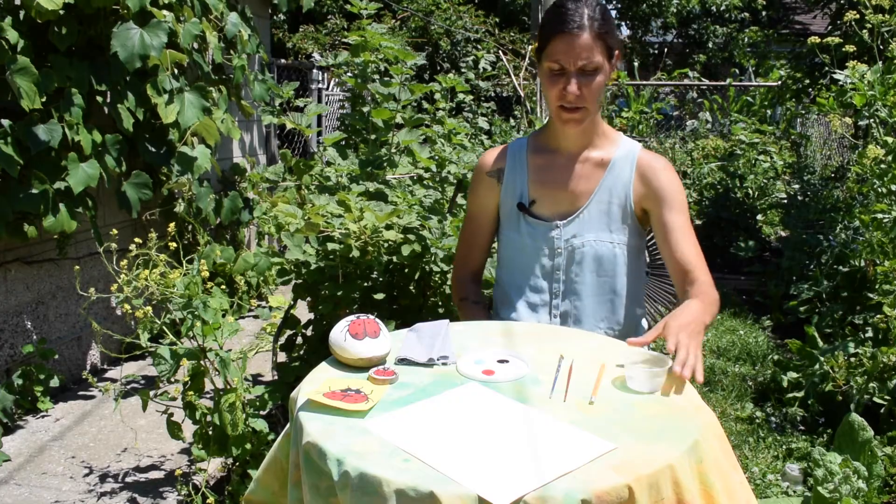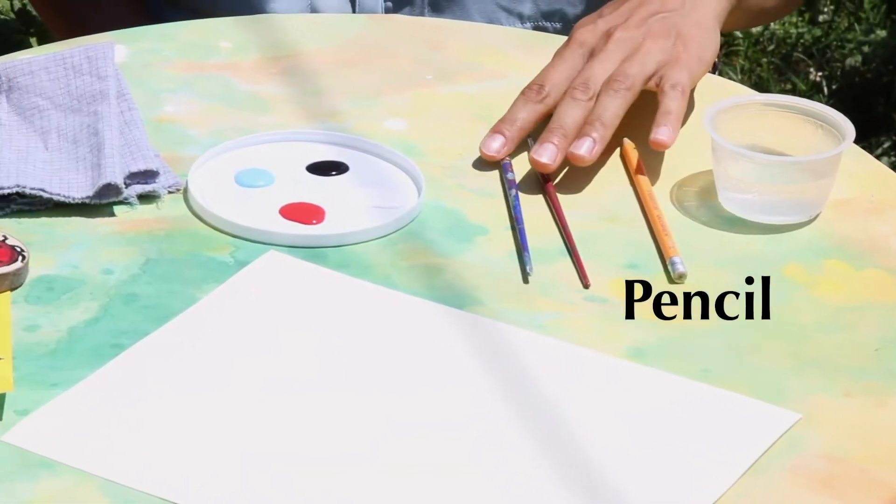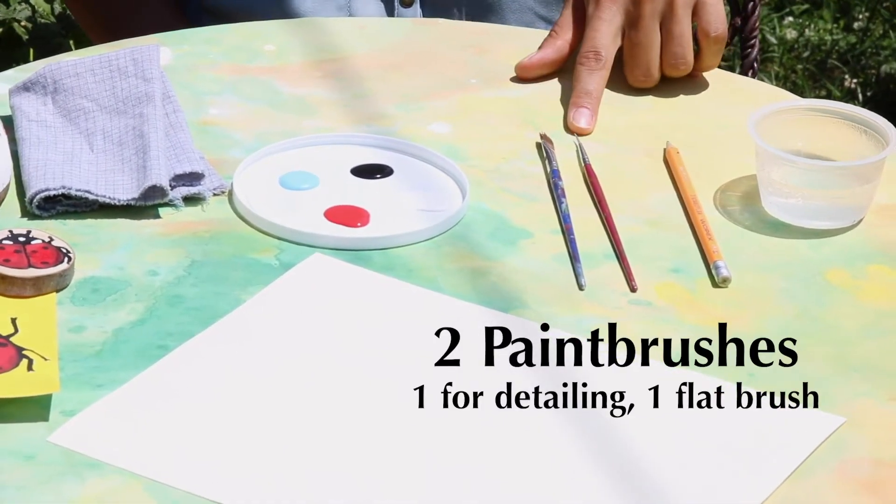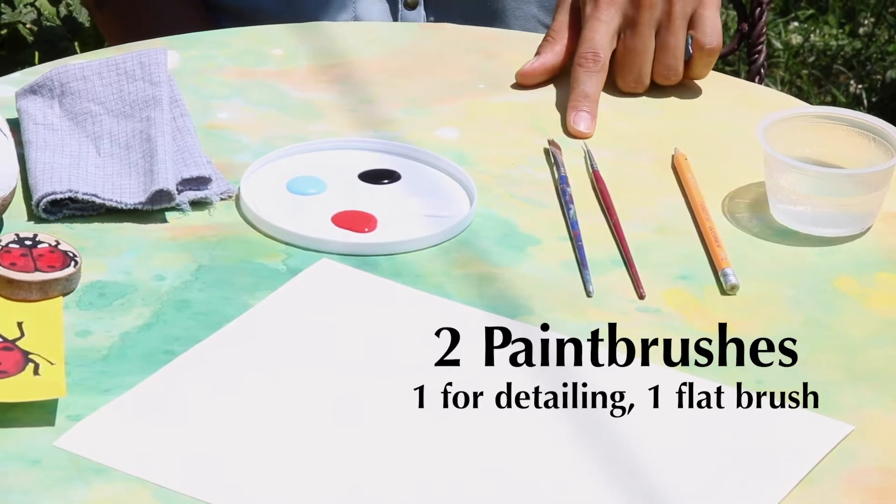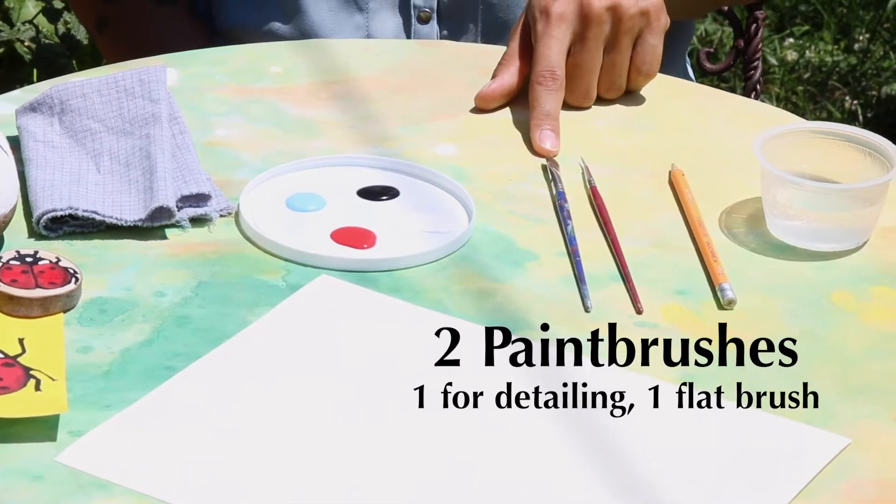For this craft you're going to need some water, a pencil, two paint brushes—one to do the outline, so a small detailed brush, and then a flat brush to fill in the spaces.